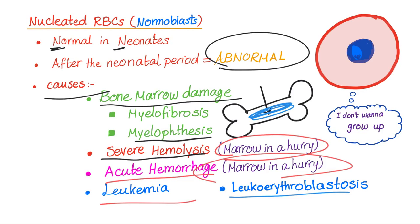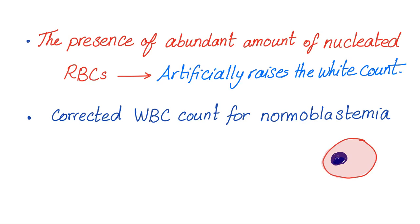Leukoerythroblastosis is a condition where you have immature bone marrow white blood cells and immature nucleated red blood cells, so you end up with both immature white blood cells and immature red blood cells. Now pay close attention: the presence of a large amount of nucleated red blood cells will artificially raise your white blood cell count.